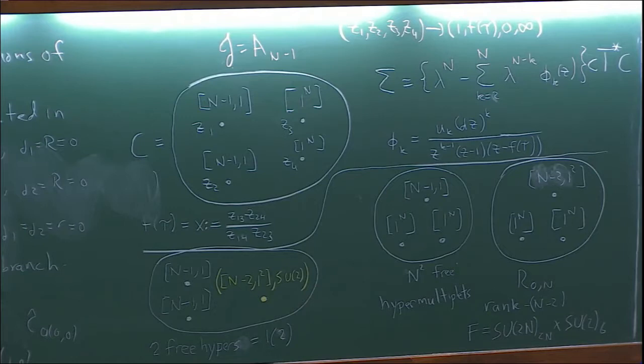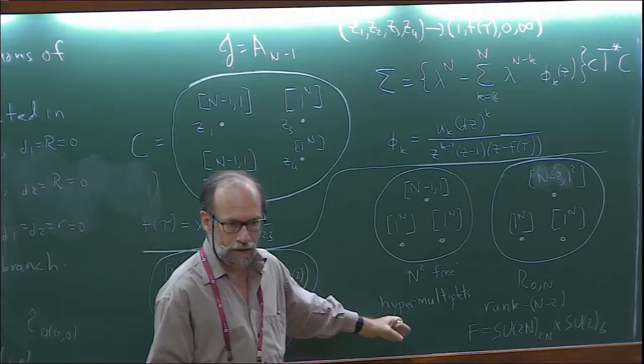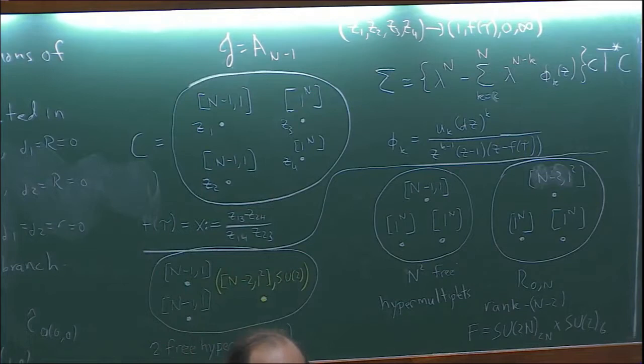For n equals 3, the global symmetry gets further enhanced to E6 — you see that from additional contributions to the index. If only lambda equals trivial contributes to order tau squared, then there are no free hypers, and the global symmetry is just the product of the manifest global symmetries F_i. Conversely, if some higher lambdas contribute at order tau, we get free hypers and enhanced global symmetry F.